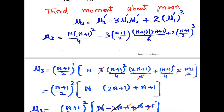The third moment about the mean is represented by μ₃ = μ₃′ − 3μ₁′μ₂′ + 2(μ₁′)³. Now put the values of the moments about origin — the third moment, first moment, and second moment. The video about moments about origin, its link can be found at the end screen.